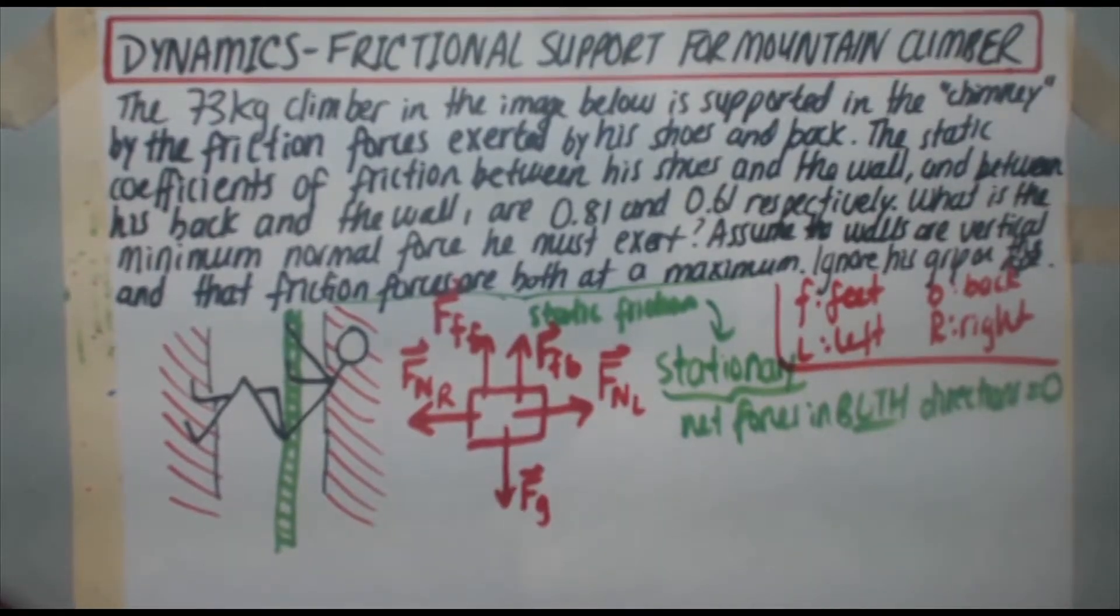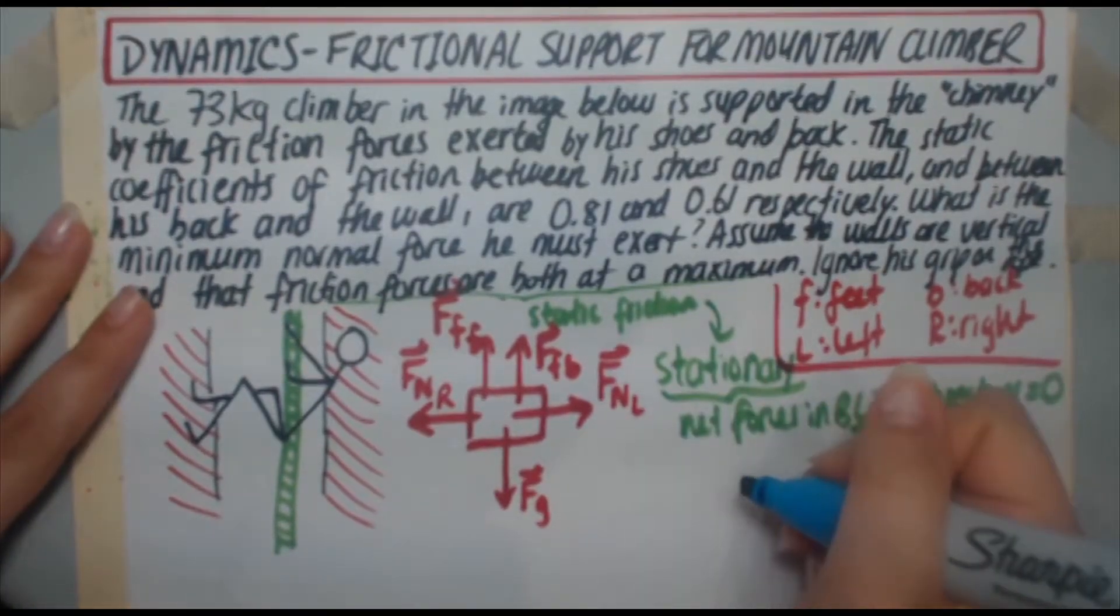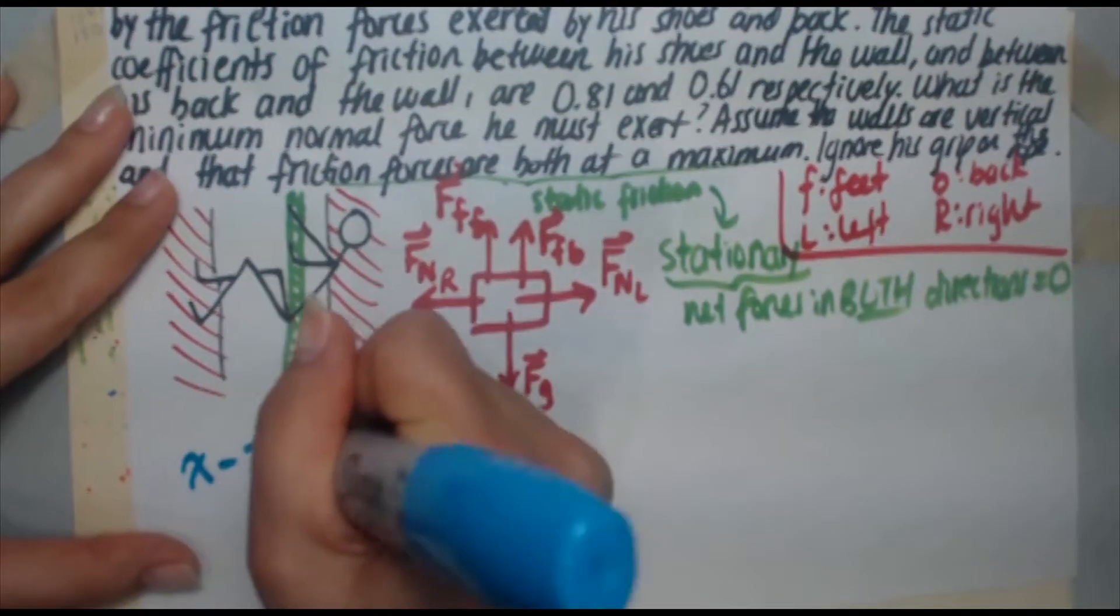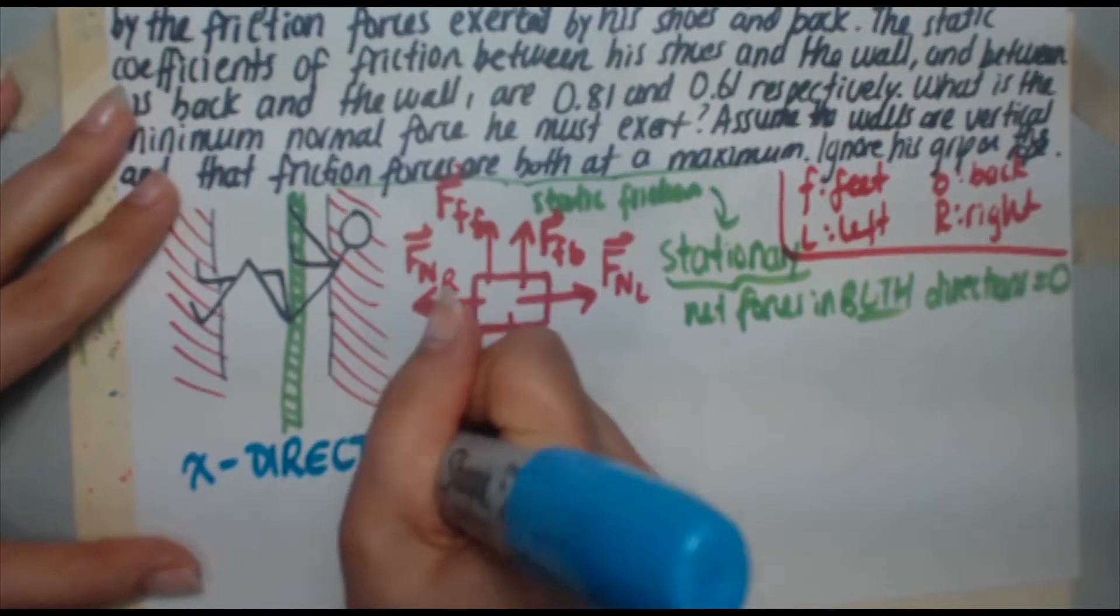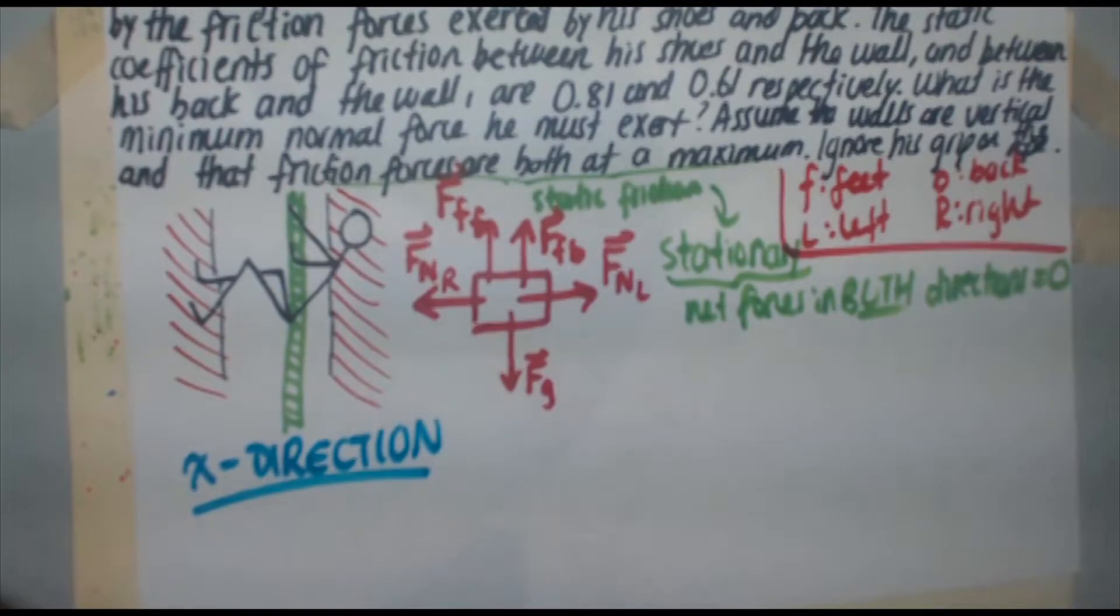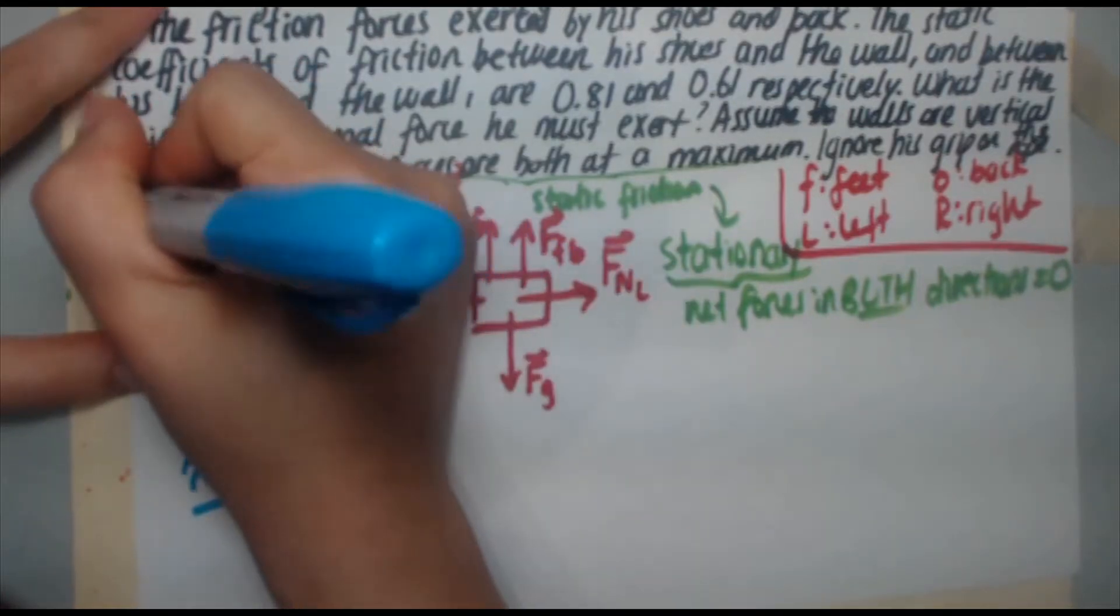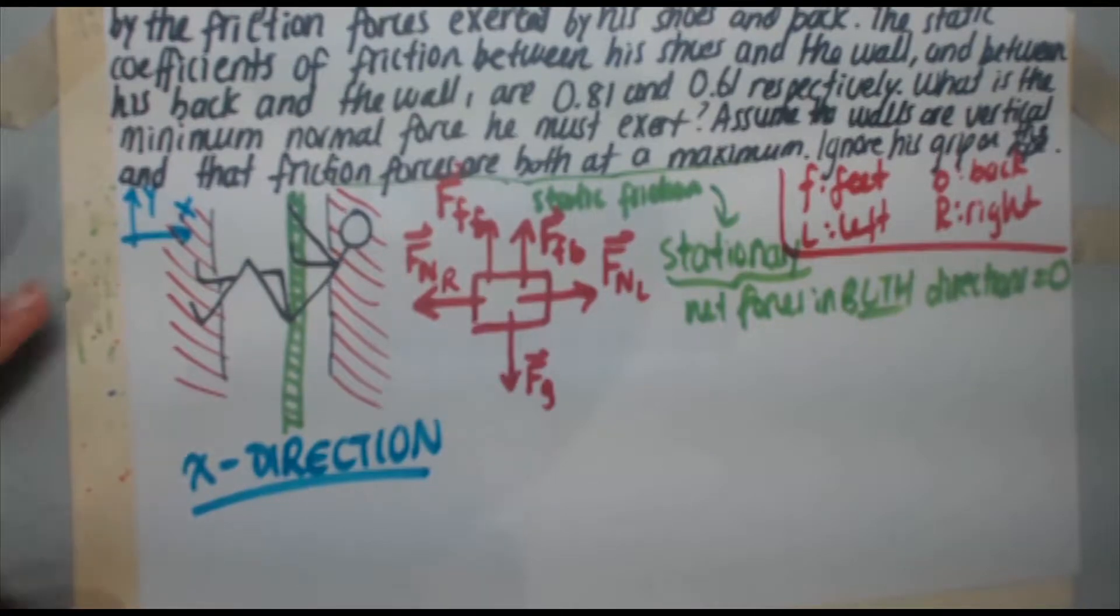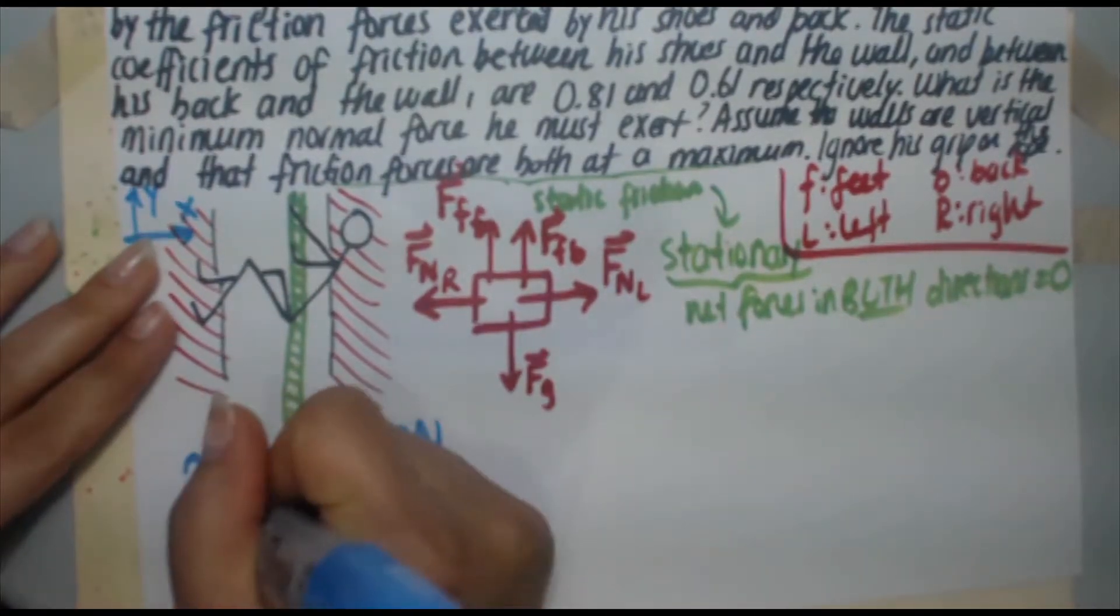So here we go. I'm going to start off with the x direction because I've got the least amount of forces. I'm going to simplify this problem a great deal. So let's do this here. x direction. In the x direction, so I've got my FNL, FNR. Now, in order to assign positive and negative values, I need to assign positive negative directions. So I'm going to let up be positive y, I'm going to let right be positive x. So here we go.